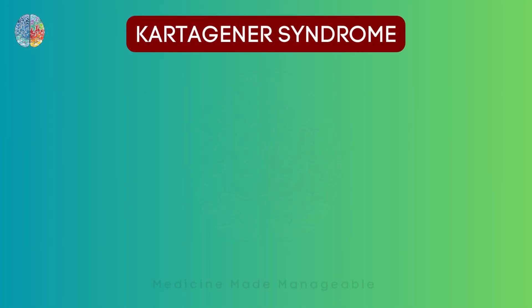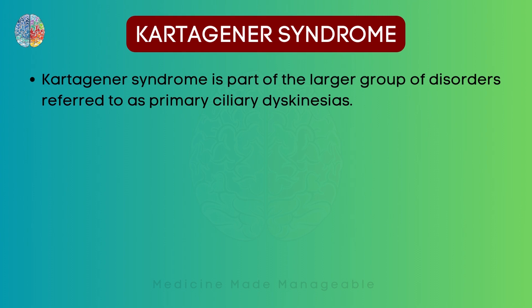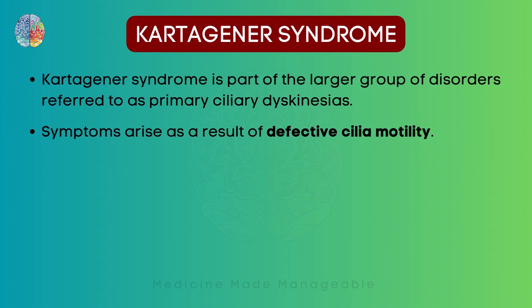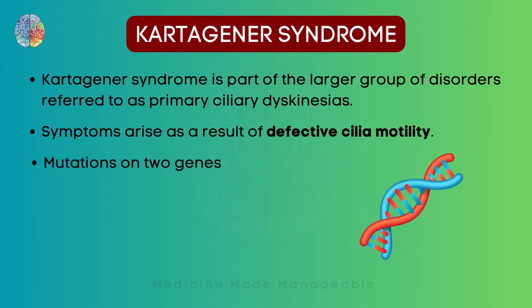So what is Kartagener syndrome? It is basically a part of a group of disorders which is called primary ciliary dyskinesias. As the name tells us, ciliary means cilia, dys in dyskinesia means abnormal, and kinesia means movement. So Kartagener syndrome is a disease where there is defective cilia motility. There are two important mutations which cause this disease: DNAI1 and DNAH5.